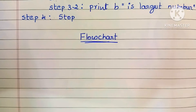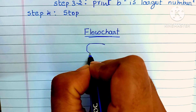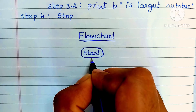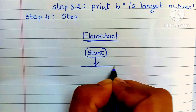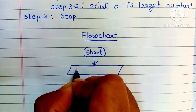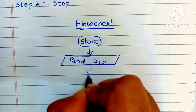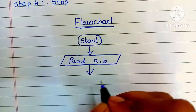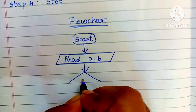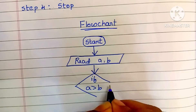A flowchart is a graphical representation of an algorithm. It always starts with the start statement written inside an oval shape. Next, we read two variables a and b, written inside a parallelogram shape. Then we put the condition — if a greater than b — written inside a diamond shape.